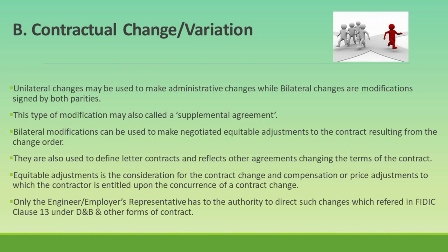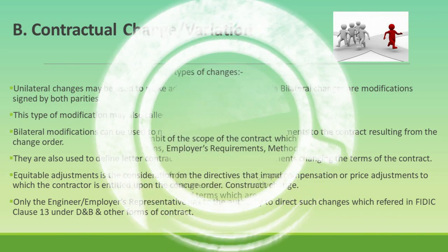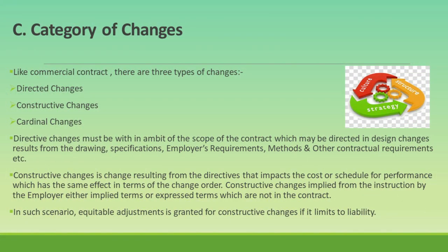Equitable adjustments are the consideration for the contract change and include compensation or price adjustments to which the contractor is entitled upon the concurrence of a contract change. Only the engineer or employer's representative has the authority to direct such changes, as referred to in FIDIC Clause 13 under Design and Build and other forms of contracts. Like commercial contracts, there are three main types of changes in EPC contracts: one, directed changes; two, constructive changes; three, cardinal changes.